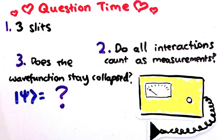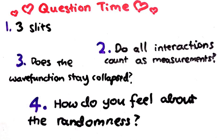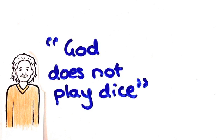And finally, one about interpretations. What do you think of quantum randomness? Do you understand why some physicists had a problem with it?